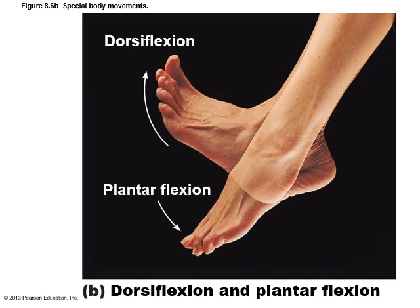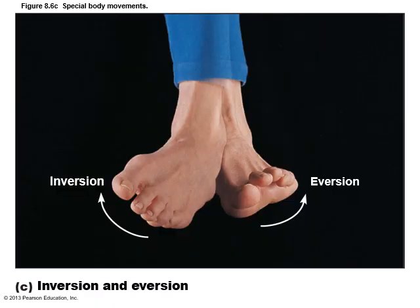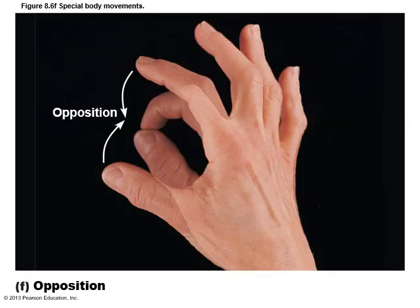The foot is dorsiflexed when the toe is pointing up, and plantar flexion is when the toe is pointing down — like a ballerina standing up on her tiptoes during a performance. Inversion and eversion only apply to feet: inversion is turning the foot inward, eversion is turning the foot outward. Opposition is where you're opposing the other fingers — touching the thumb to the other fingers.